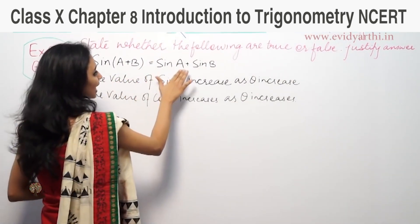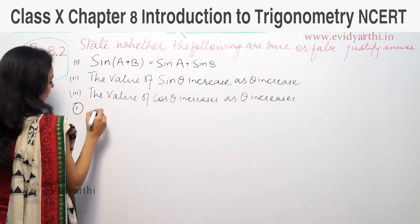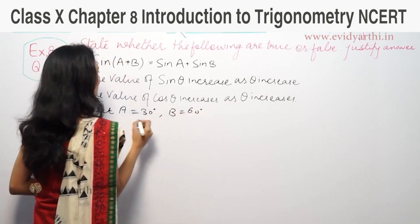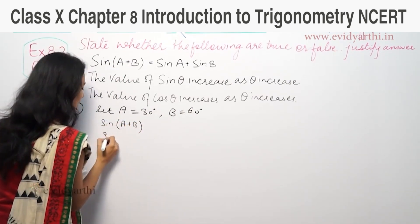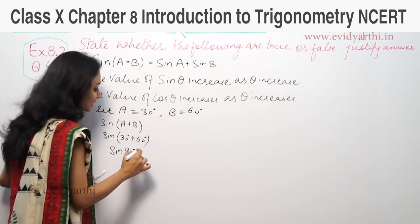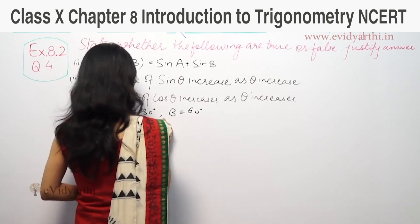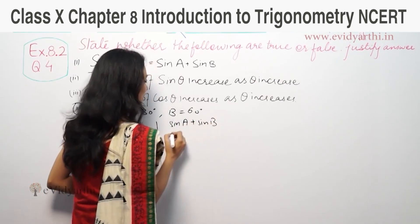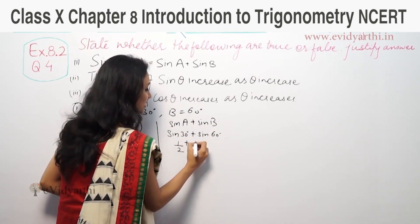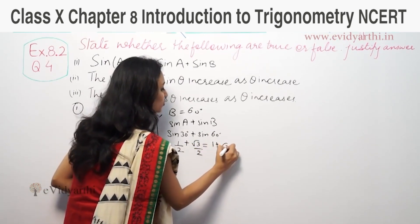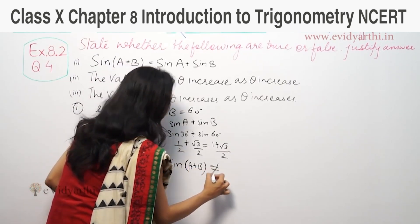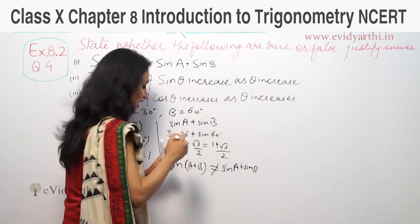So the first part is: sin(A+B) is equal to sinA plus sinB. Let's suppose angle A is 30 degrees and angle B is 60 degrees. So sin(A+B) means sin(30+60) = sin 90°, and sin 90° = 1. Now sinA + sinB means sin 30° + sin 60° = 1/2 + √3/2. Since 1 ≠ (1+√3)/2, sin(A+B) is not equal to sinA + sinB. So this statement is false.